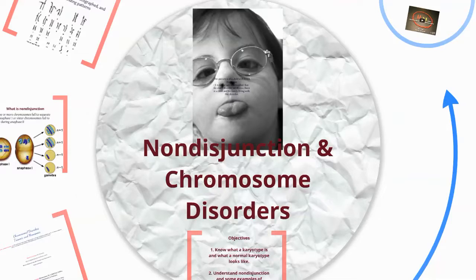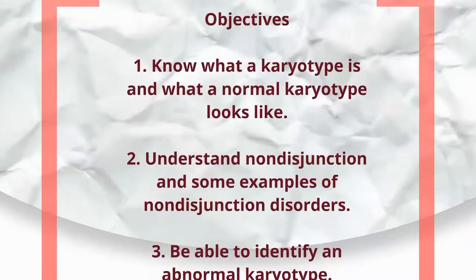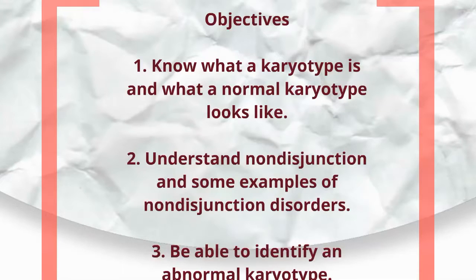Let's go ahead and start off with the objectives of the lesson. I want you to know what a karyotype is and what a normal karyotype looks like. By the end of this, you should understand non-disjunction and some examples of non-disjunction disorders. You should also be able to identify an abnormal karyotype, and I'll give you some hints on how to do that.